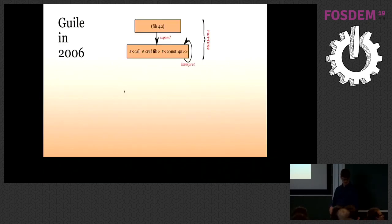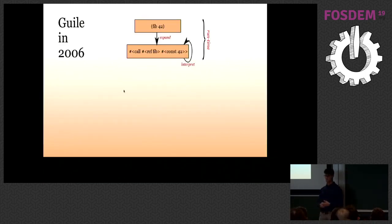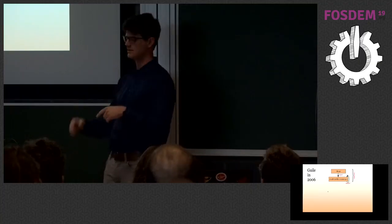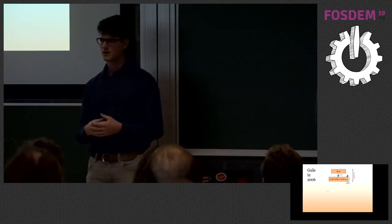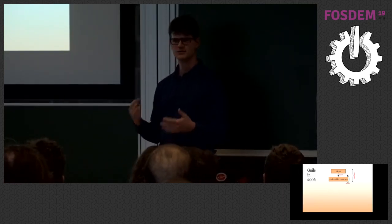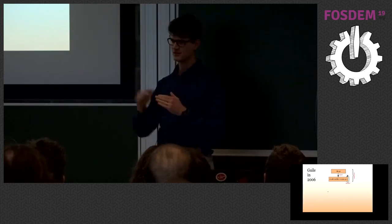In GUILE 1.6 around 2006, at runtime you always started from the source code. You'd never cache any compiled analysis. You'd go through an expansion phase where all macros were expanded out, producing a primitive Scheme form, and at runtime you'd keep interpreting those primitive Scheme forms. We were very proud of our interpreter then — we felt like we had a fast interpreter and were at some kind of local maximum. But it was very local and not very maximum.